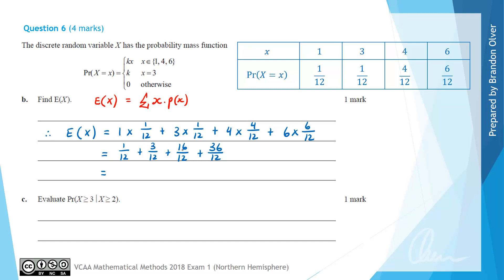And now we can continue to simplify that. So we have 1 plus 3 is 4, plus 16 is 20, plus 36 is 56 over 12. So simplifying that once more, we can see that 4 is a common factor of both, which is going to give us 14 over 3. And that is the simplified value for the expected value of x.